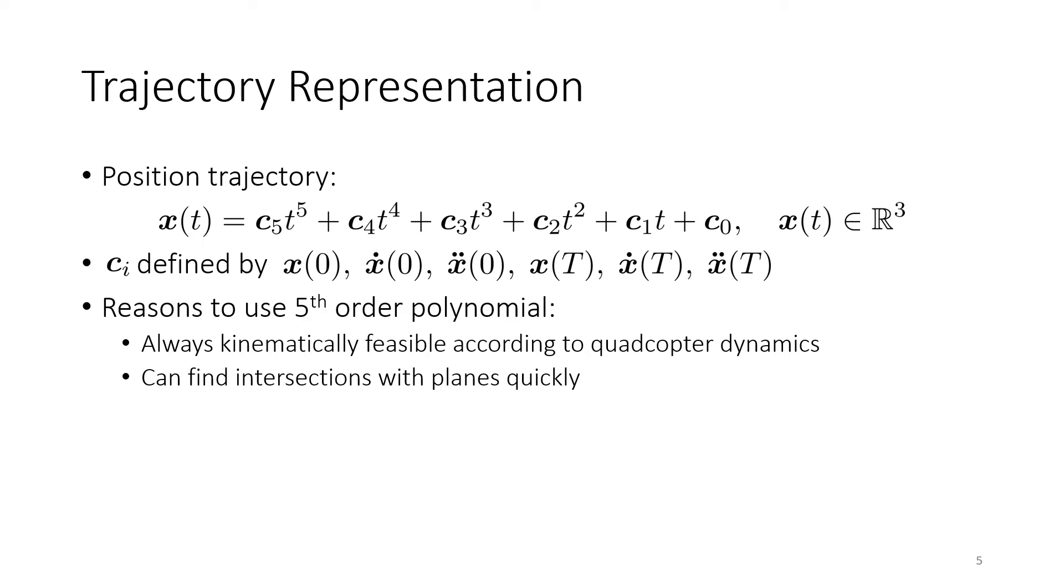One of the main reasons that we use these fifth-order polynomials as our trajectory representation is due to the dynamics of a quadcopter. Specifically, for a quadcopter which has control inputs of thrust and angular velocity, these trajectories are always guaranteed to be kinematically feasible. Secondly, this polynomial representation makes it very efficient to perform collision checking.